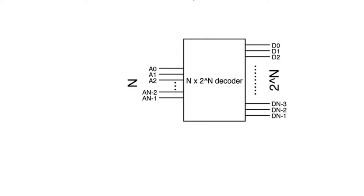We finally have to talk about the biggest deal in memory arrays: the hardest sub-circuit to design, which is row decoders. Row decoders are particularly important because they represent a good chunk of the total delay while reading and also while writing. That's because row decoders have to drive the word lines, and word lines are often very resistive, which makes the word line delay significant.